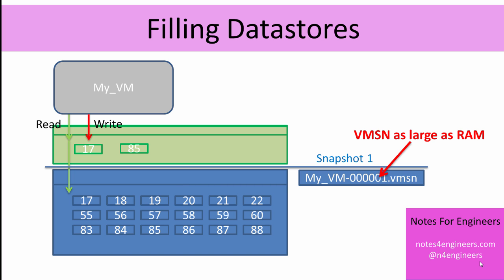Incidentally, there is an option to not include memory state with a virtual machine snapshot, and that's appropriate if you're using the snapshot for backup, in which case the VMSN file doesn't actually get very large. The file that does always get created and does grow over time is the delta file. The delta file is where the virtual machine is writing data to. Every time the virtual machine writes to a block, that write goes into the delta file.